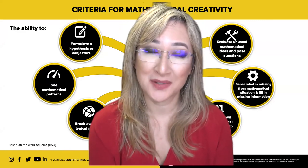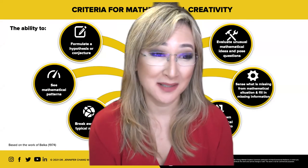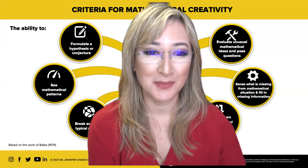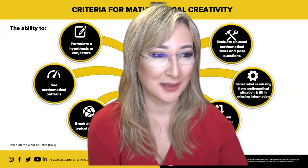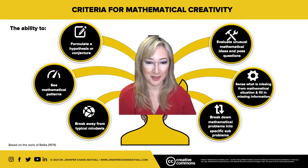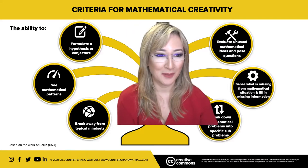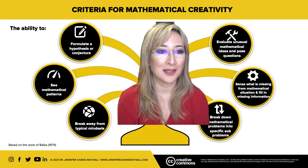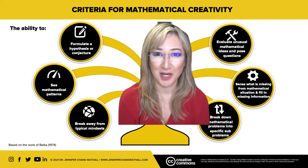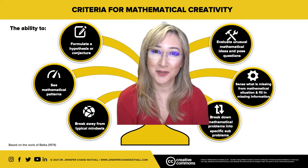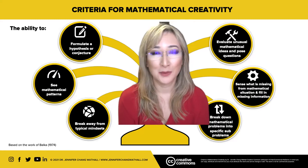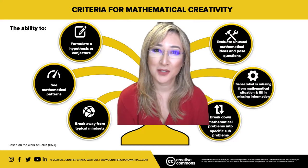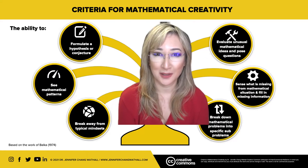So today I'm going to go over some different criteria or aspects of mathematical creativity. The first one is the ability to formulate a hypothesis or conjecture. We want our students to be able to predict and look at data or situations and make a conjecture or hypothesis so that they're actually engaging their critical thinking skills.